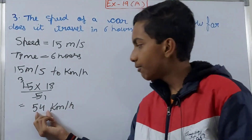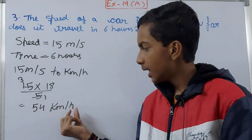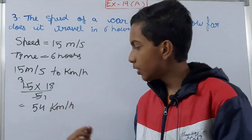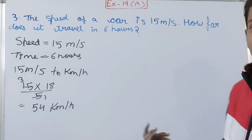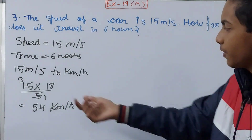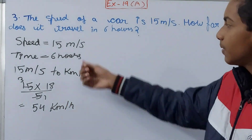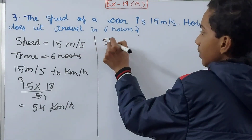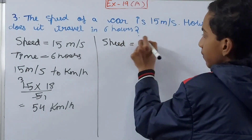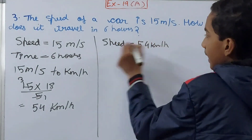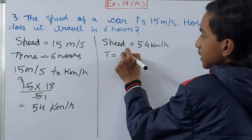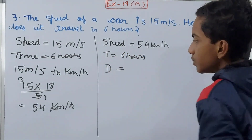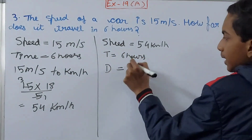So the car travels 54 kilometers in one hour — that's what 54 kilometers per hour means. Now our speed is 54 kilometers per hour and the time is 6 hours. We can now calculate the distance.